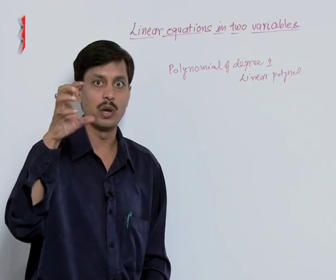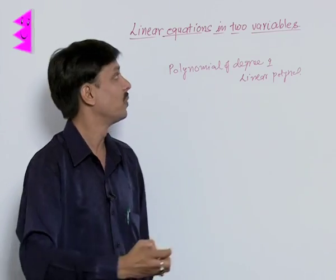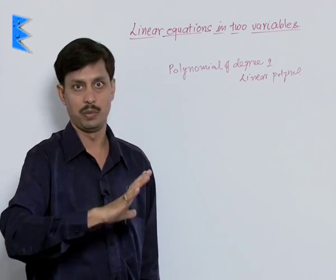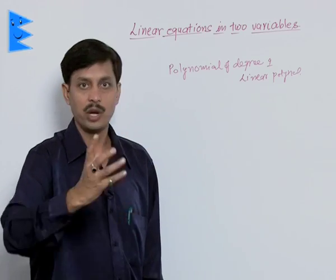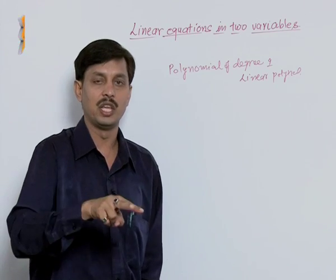But if a linear polynomial has one variable and this is fixed with some particular constant, then that relation equality becomes what? Linear equation in one variable.